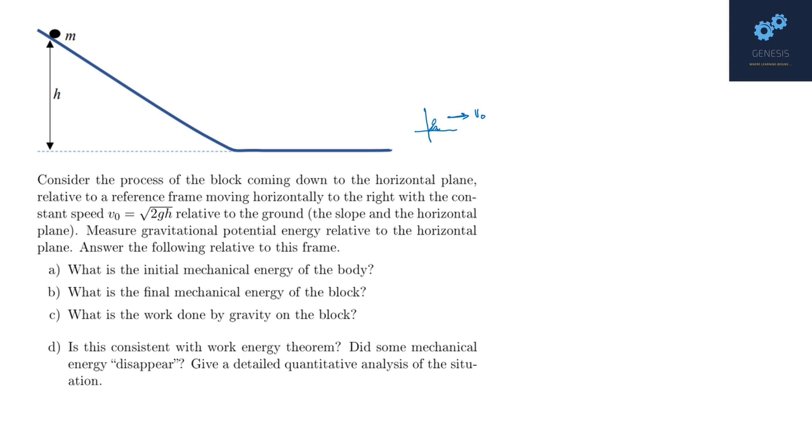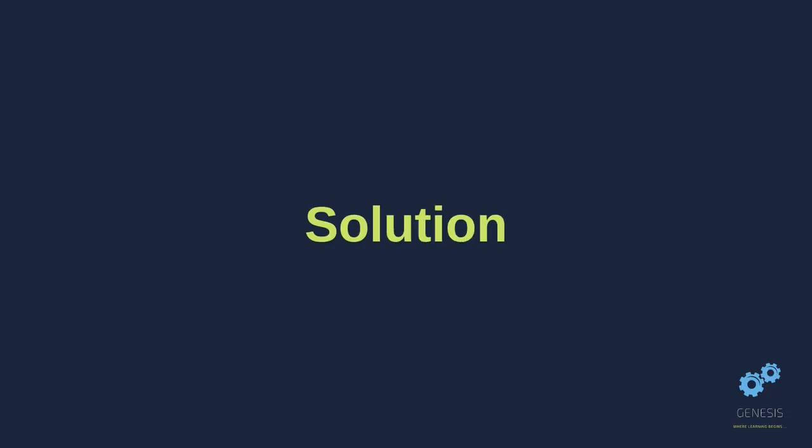We now go ahead with the solution. The time taken for the block to come to the horizontal plane is root 2h/(g sin²θ). You can find this time in the earth frame, and since there is no relativistic effect involved, the time in the moving frame is also the same. Let me draw the situation in the earth frame first.